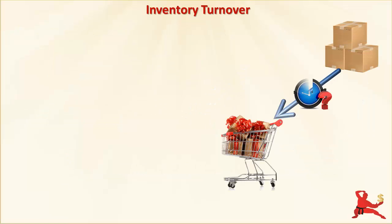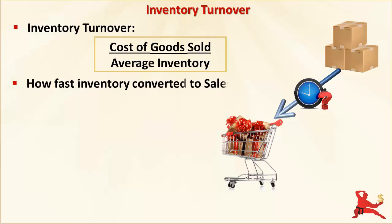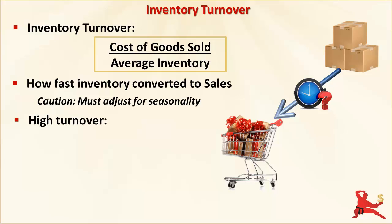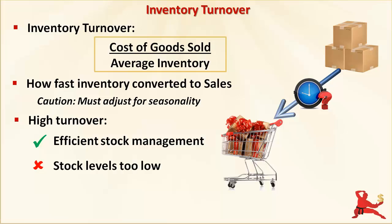Inventory turnover is an indicator of how fast inventory is converted to sales — it's the number of times you turn your stock over in a year or other shorter period. With a highly seasonal business, annual inventory turnover is not appropriate because you are lumping low and high seasons together; you have to fine tune the calculation to allow for the effect of seasonality. High inventory turnover could mean one of two things: efficient stock management, which is good, or excessively low stock levels, which is not good. Being out of stock on a recurring basis leads to a loss of sales and, over the long term, loss of customers to your competitors. Make sure you know the reason for high inventory turnover in your business.